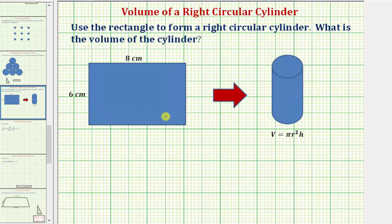Notice how if we roll up this rectangle and form this right circular cylinder, this side that measures six centimeters is going to be the height of the right circular cylinder. So we know the height equals six centimeters.